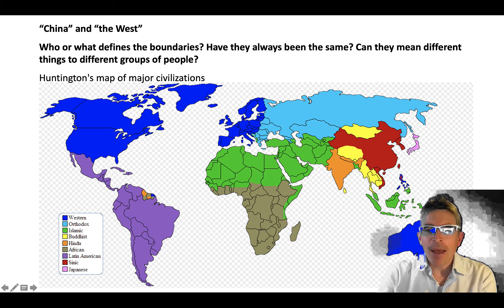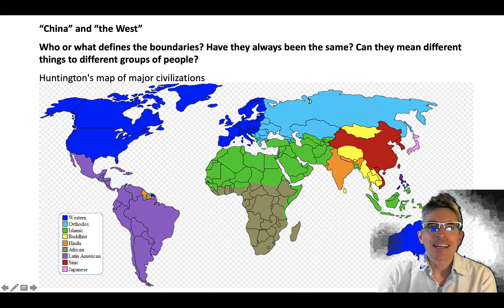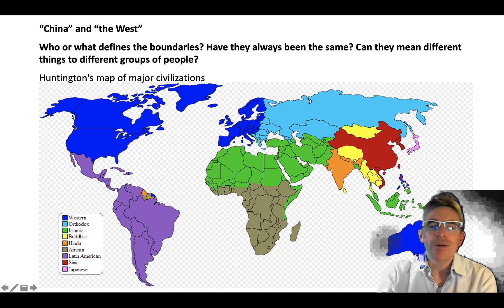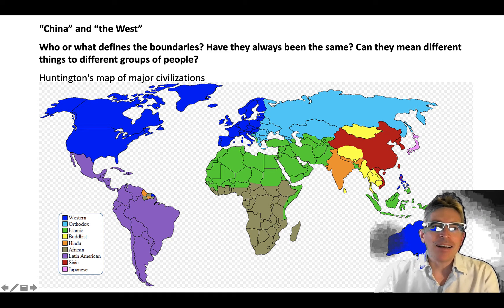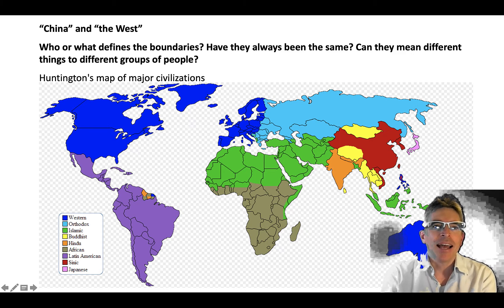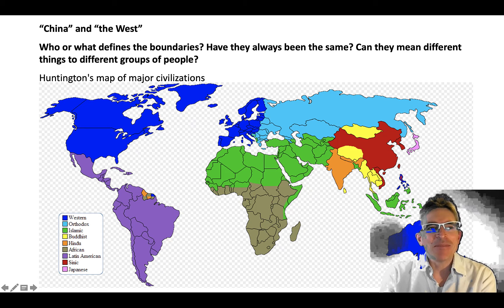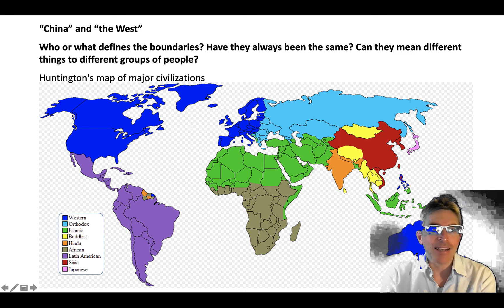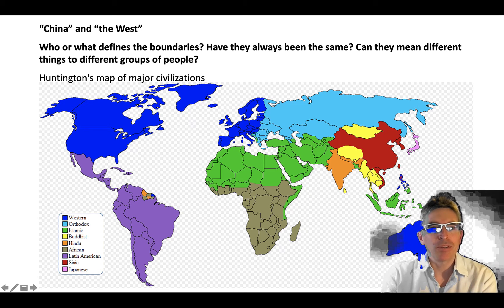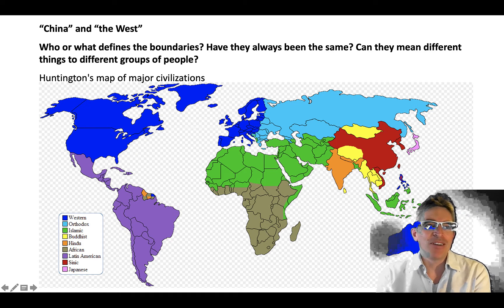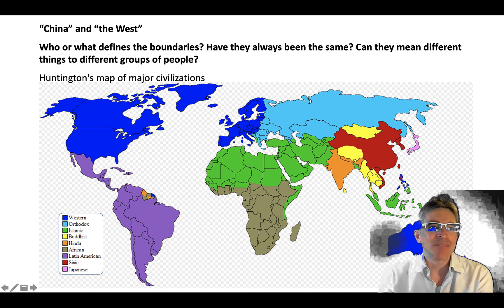There is actually a lot to unpack just in the title of our class. China and the West are two terms that look pretty obvious on the surface, but once we get into the meaning of those terms, it gets more complicated. Here are some questions to bear in mind: Who or what defines the boundaries of what constitutes China and the West? Have they always been the same? Can they mean different things to different groups of peoples? Here is Huntington's map of major civilizations from the 20th century.